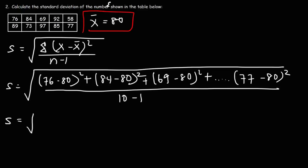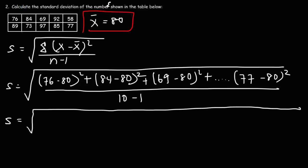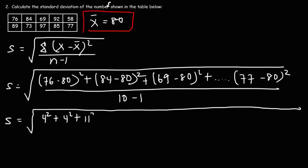If you want to show all of your work without having to do so much writing, here's what you can do. Notice that we need to take the difference between each number and the mean. The difference between 76 and 80 is negative 4, but when you square negative 4, it's the same as squaring positive 4, so we can simply write it as 4 squared. The difference between 84 and 80 is also 4 — that's plus another 4 squared. 69 is 11 units away from 80. 92 is 12 units away from 80. 58 is a difference of 22, and 89 minus 80 is a difference of 9.